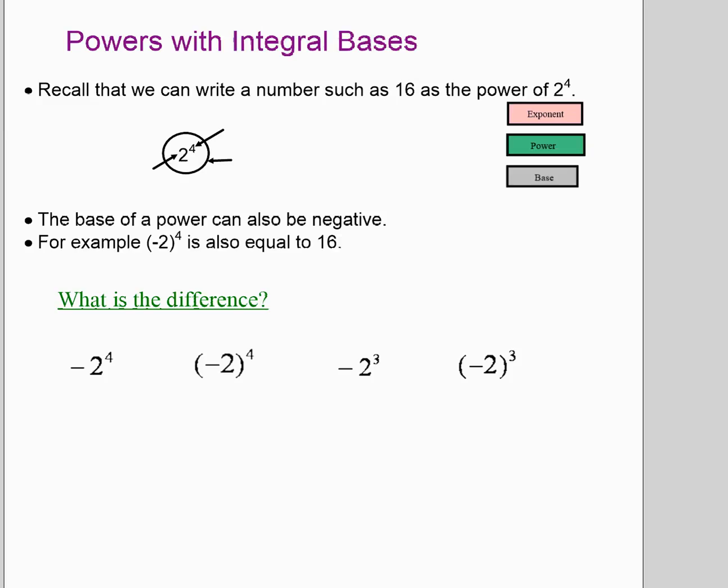A quick review: when we are labeling or talking about exponents and powers and bases, the whole thing, base and exponent together, is called the power. The exponent, the little number, is the exponent, and the big number, the one that gets repeated over and over again, is the base.